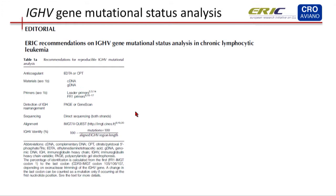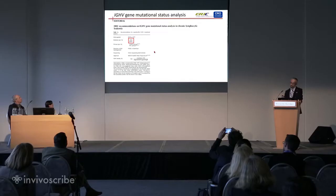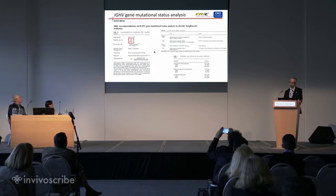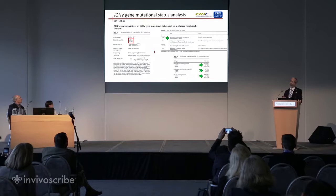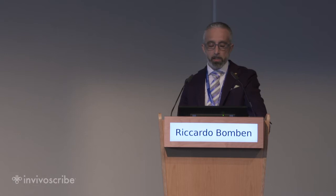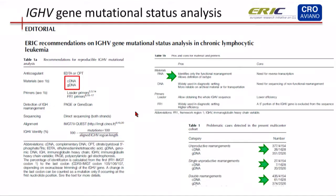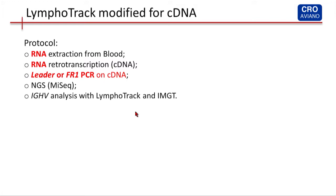Since we were very familiar in my lab with the ERIC recommendation and were used to using RNA, and since according to the ERIC recommendations RNA extraction is more demanding than DNA extraction and requires a retrotranscription experiment, but we have the possibility to extract RNA for research purposes, we decided to slightly modify the Lymphotrack assay. The protocol is: RNA starting from blood, retrotranscribed into cDNA, leader PCR or FR1 PCR on the cDNA, run on the MiSeq, and analyzed with the Lymphotrack assay or IMGT.